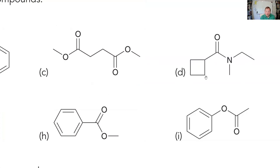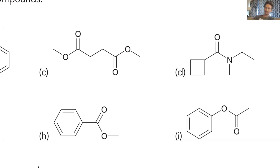Example D is a tricky one — how do we name an acid when it's attached to a cyclic group? We treat the cyclo group as a substituent: cyclobutyl or cyclobutane, and then we just use the term carboxylic acid. In this case since it's an amide, we use the cyclobutane prefix and then amide instead.